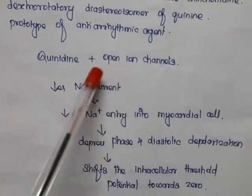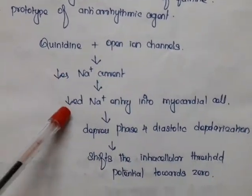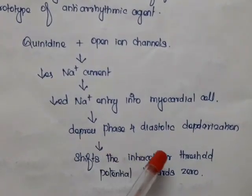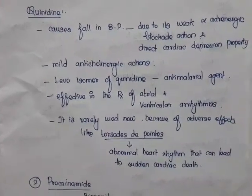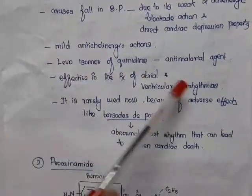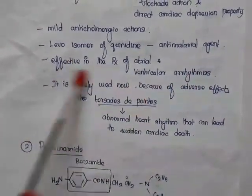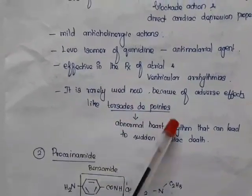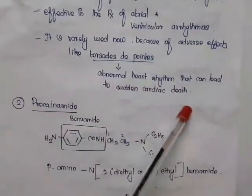Quinidine binds with open ion channels and decreases sodium current — that is, it decreases the entry of sodium into the myocardial cell and depresses phase 4 depolarization. It also has direct cardiac depressant properties and mild anticholinergic action. It is used in the treatment of atrial and ventricular arrhythmias, but is rarely used now due to adverse effects like torsades de pointes, which is an abnormal heart rhythm that can lead to sudden cardiac death.